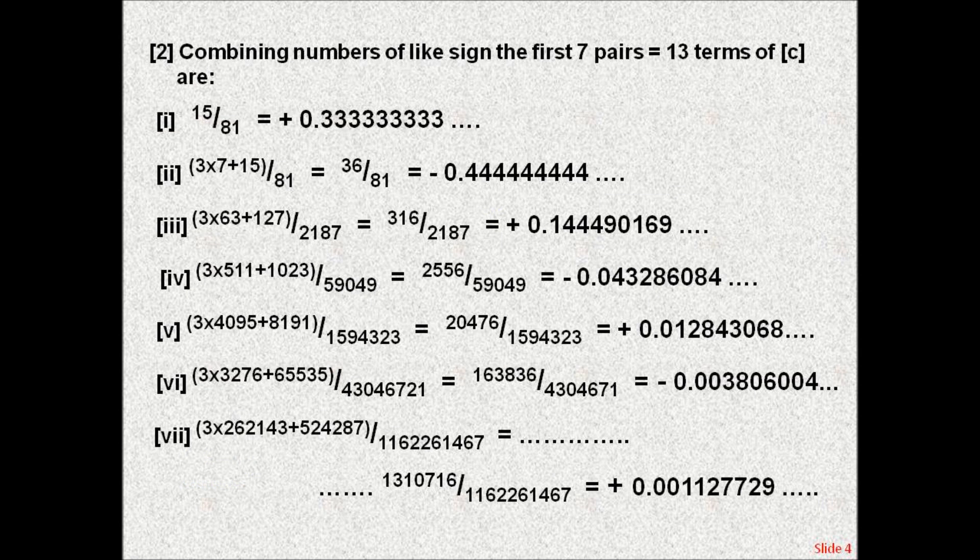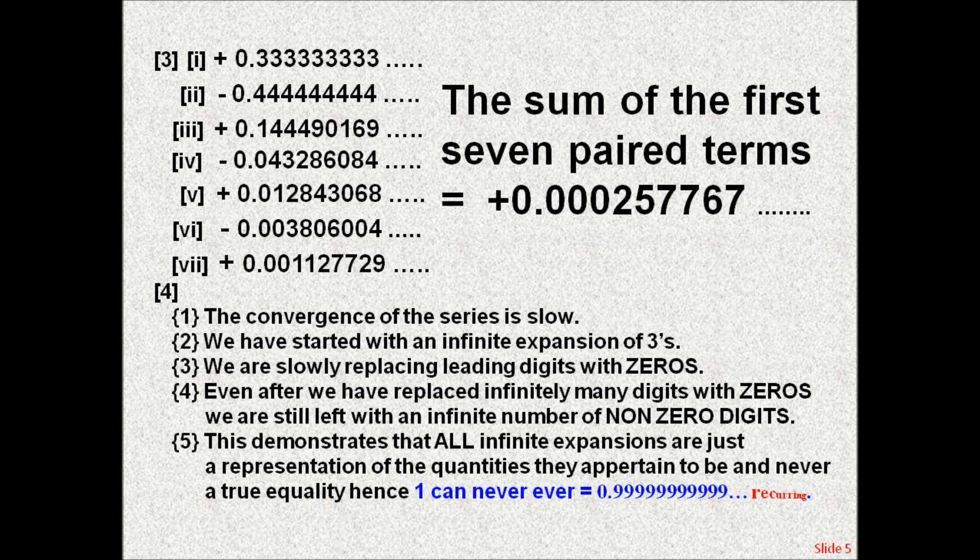This slide shows the first seven paired term-by-term numerical results for the infinitesimal fraction representation of zero. Adding the sums for the first seven paired terms gave the infinite partial sum plus 0.000257767. We can deduce that: